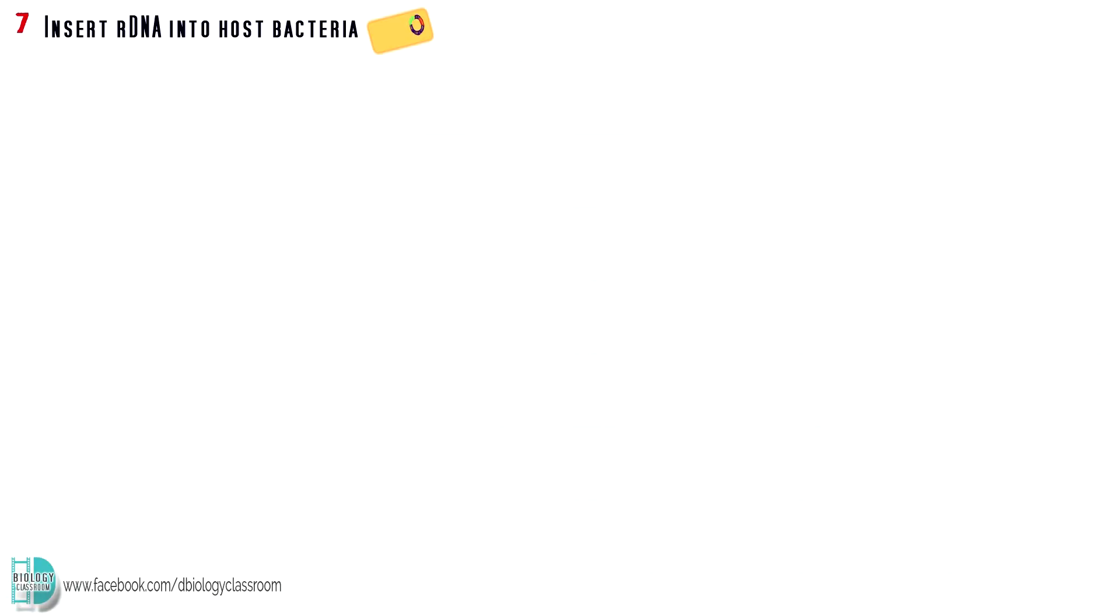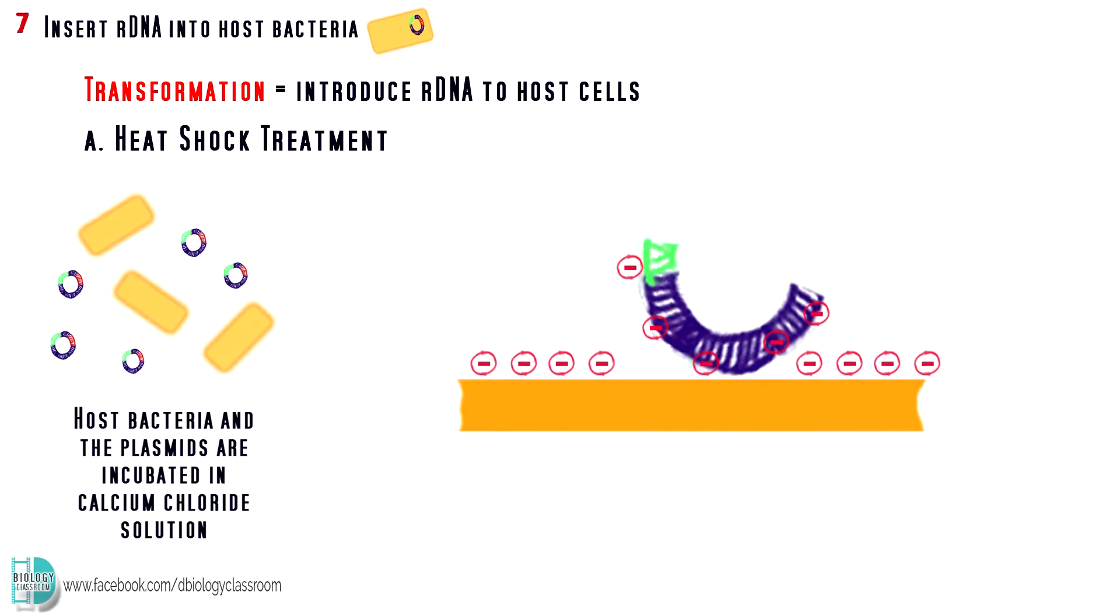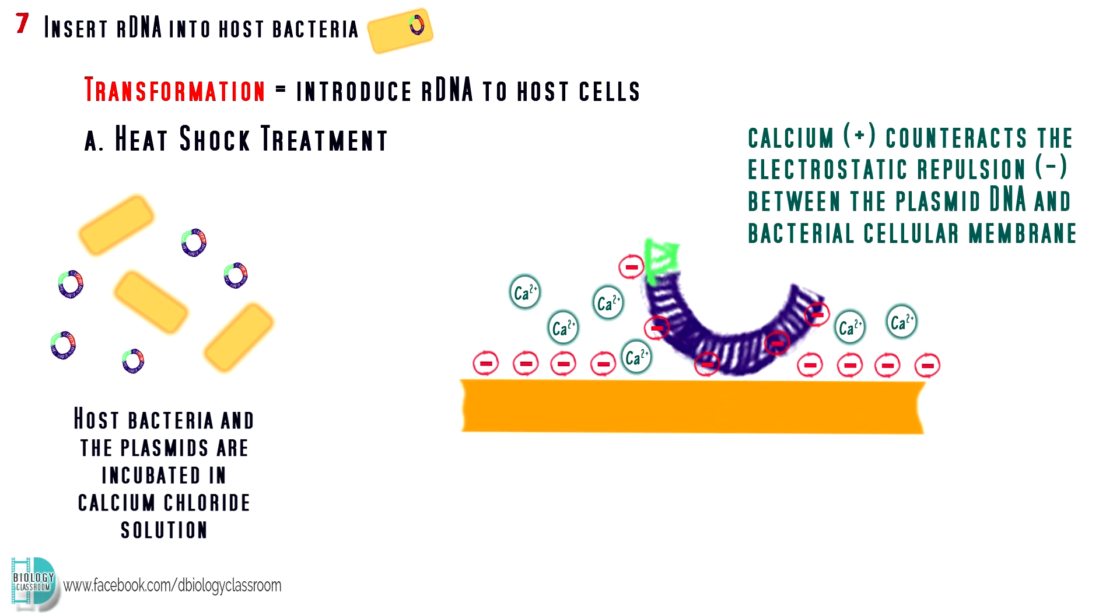Now, we can insert the plasmid into the host cell. The process is known as transformation. There are several ways to do it. The first one is heat shock treatment. The host bacteria and the plasmids are incubated in calcium chloride solution. The calcium-rich environment counteracts the electrostatic repulsion between the plasmid DNA and the bacteria cellular membrane. A sudden increase in temperature creates pores in the plasma membrane of the bacteria and allows plasmid DNA to enter the bacteria cell.